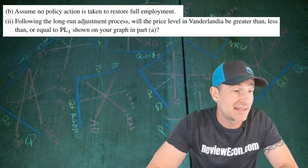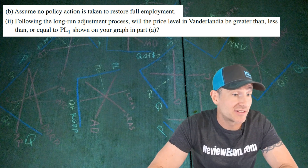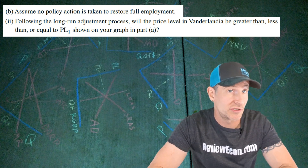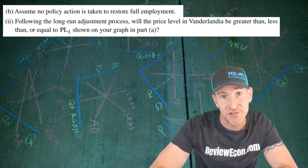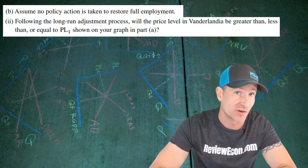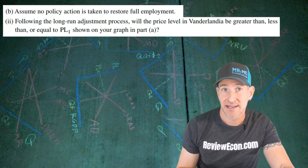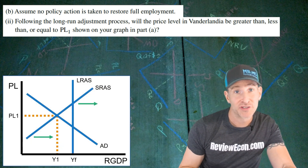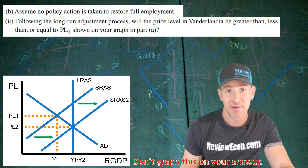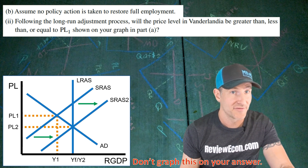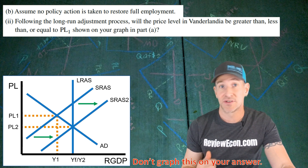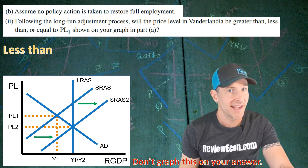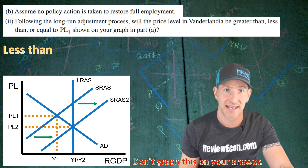For part B(ii), we just have to indicate if the price level in Vanderlandia will be greater than, less than, or equal to PL1 as a result of the self-correction shift from the short-run aggregate supply curve. If we go back and look at our graph, shifting the SRAS curve to the right until our new equilibrium output equals YF shows that we have a lower price level than where we started at PL1. To get the point for B(ii), you simply have to say: less than.